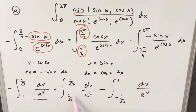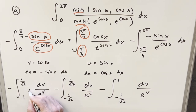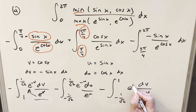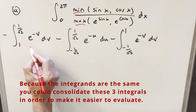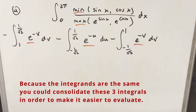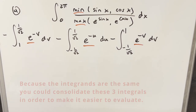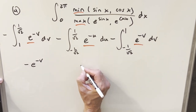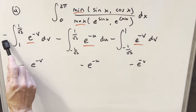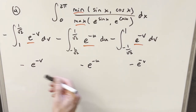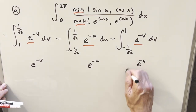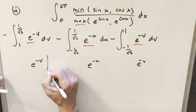Before integrating, I'll swap the bounds on one integral and adjust the sign accordingly, bringing a minus out front. For each integral, I bring the exponential into the numerator and write it as e to the minus v, e to the minus u, or e to the minus v. Now integrating each gives minus e to the minus v or minus e to the minus u, but the minus out front of each integral cancels that, leaving plus e to the minus u or v. We just need to evaluate at all the bounds.